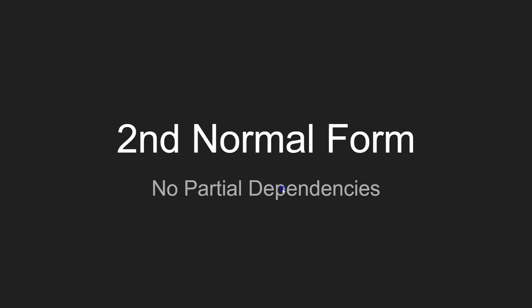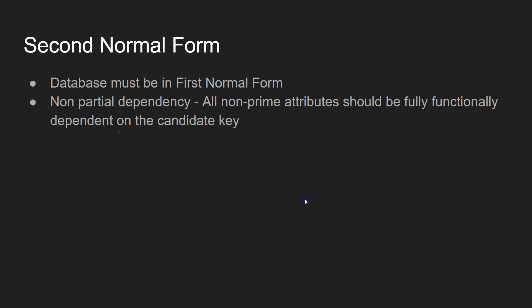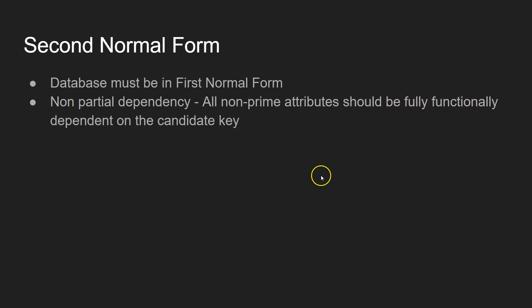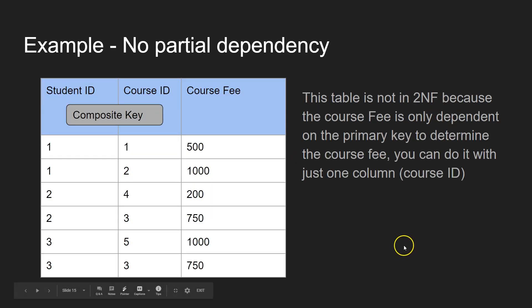Now let's move on to second normal form. Second normal form: there are no partial dependencies. What that means is, first of all, the table must already be in first normal form — you can't have a table in second normal form until you've gone through all those rules. And then all non-prime attributes should be fully dependent on the candidate key — fully dependent on the whole candidate key.